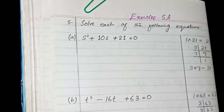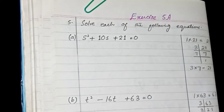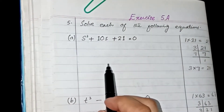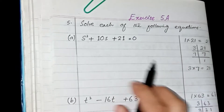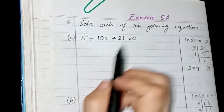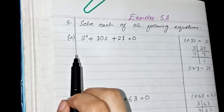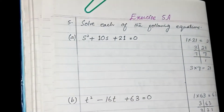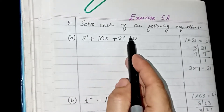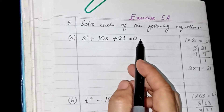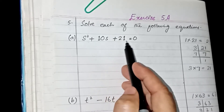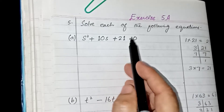Bismillah ar-Rahman ar-Rahim. Assalamu alaikum. In this video, I am going to start question number 5 of exercise 5a: solve each of the following equations. When we can make squares of the first and third term, we can apply the formula. But if we cannot, then we have to factorize it by splitting the middle term. We are going to solve this equation by splitting the middle term as we can't make 21 a perfect square.